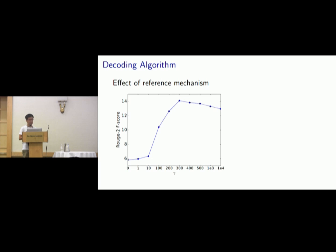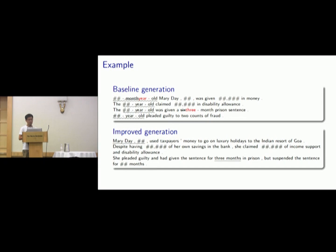So this is the effect of reference mechanism, and we can see that it can bring huge improvement to the basic decoding algorithm. And here is the example. We can find that the generated summary is also better than the baseline generation without the repetition and the information incorrectness.